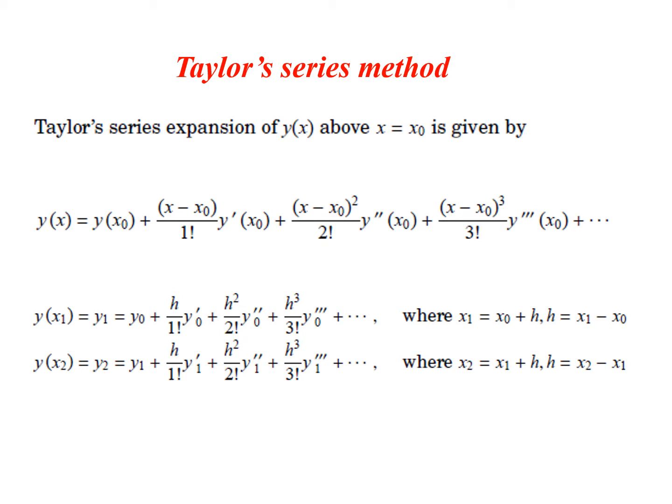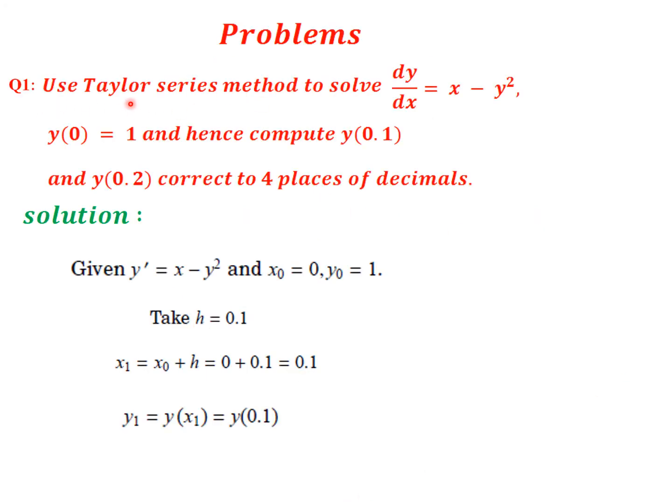For finding y1 we use the previous y value y₀, and when finding y2 we use the previous y value y1, after y1 has been found. Now come to the first problem: use the Taylor series method to solve dy/dx = x - y².